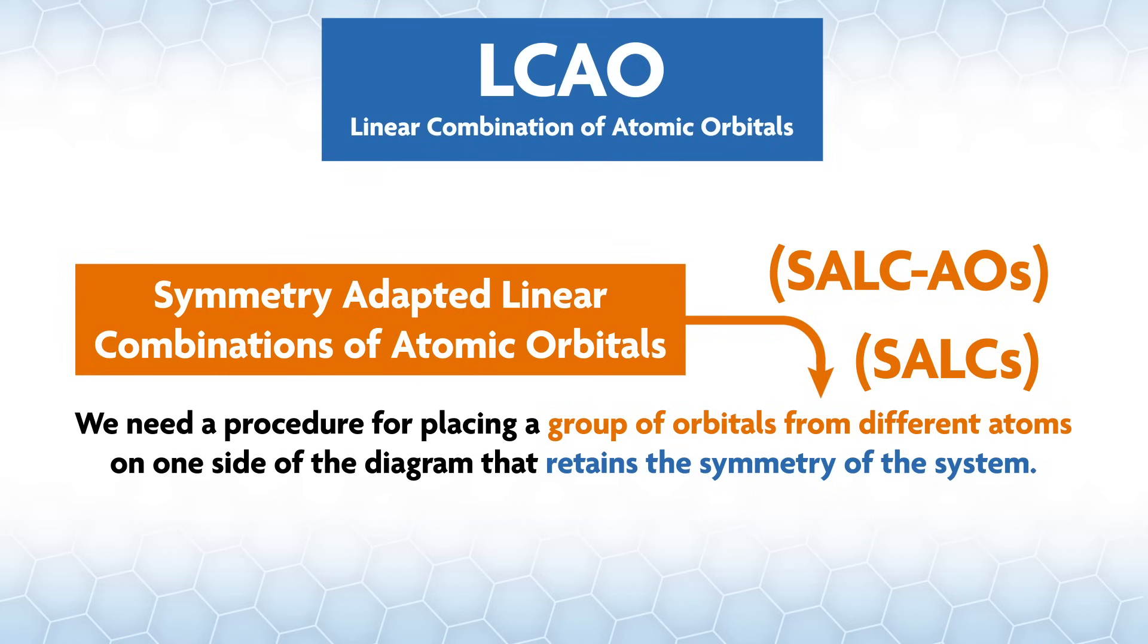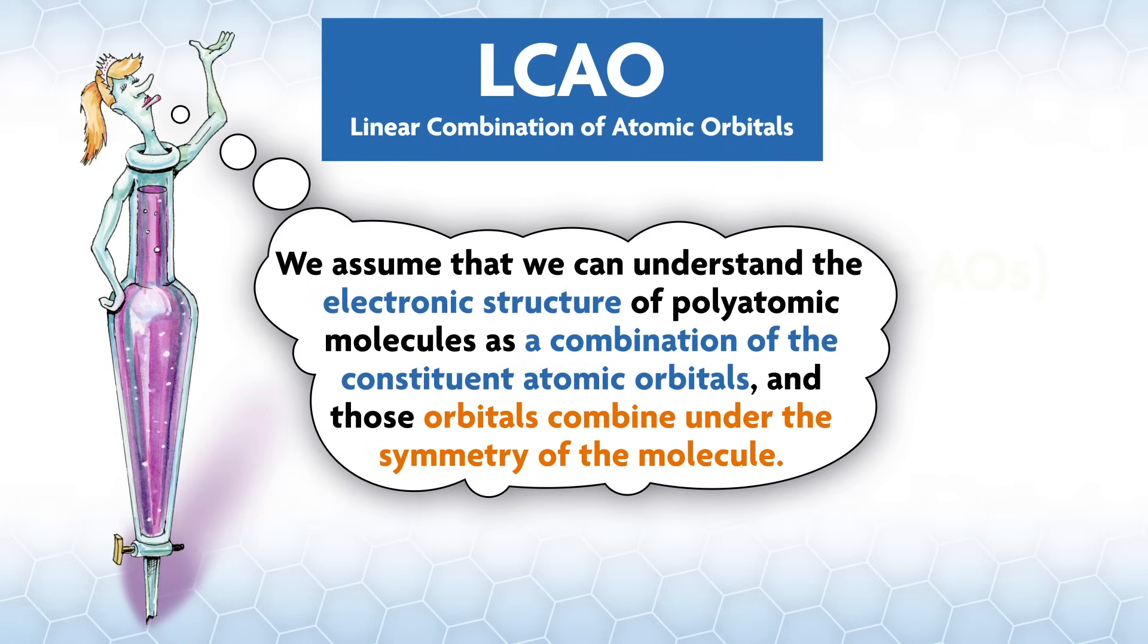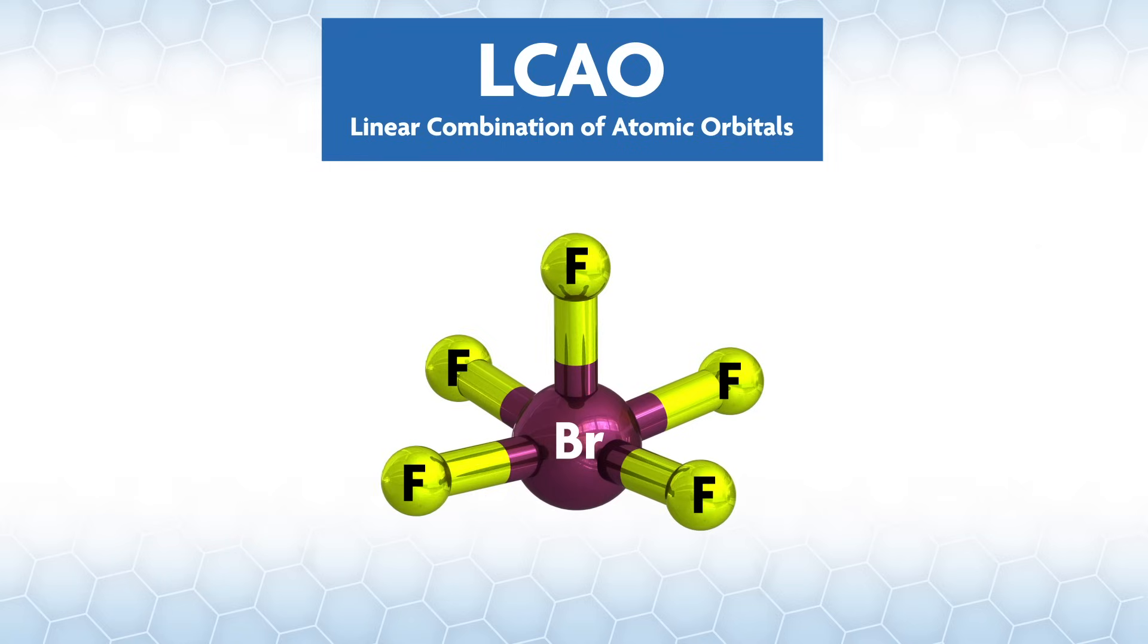This allows us to put multiple atoms on one or both sides of the diagram and combine them to get the MOs. In other words, we assume that we can understand the electronic structure of polyatomic molecules as a combination of the constituent atomic orbitals, and those orbitals combine under the symmetry of the molecule. Here, we will discuss representations in molecular orbital theory under this LCAO method.